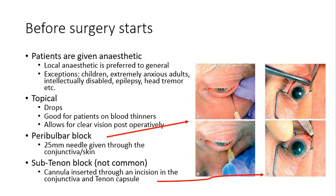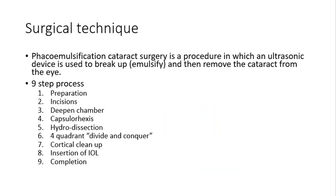Remember that cataract surgery is a sterile procedure, so everyone will be gloved and gowned and complete sterile processes will occur in the theatre. The old-style extracapsular extraction, where a large incision is placed into the eye and the whole cataract is removed, is very rare now. You'll usually see phacoemulsification cataract surgery — this is when an ultrasonic device is used to break up or emulsify and then remove the cataract from the eye.